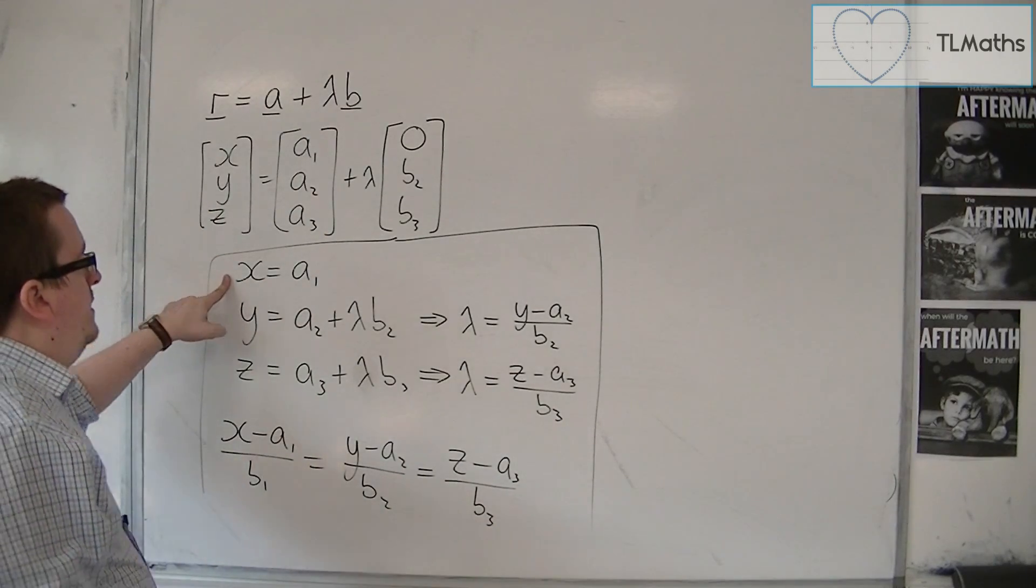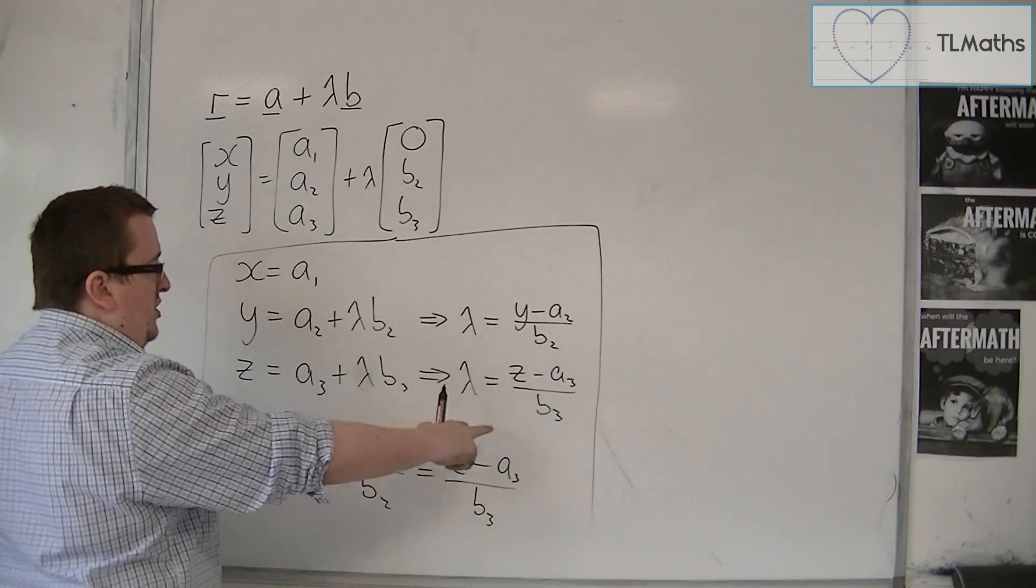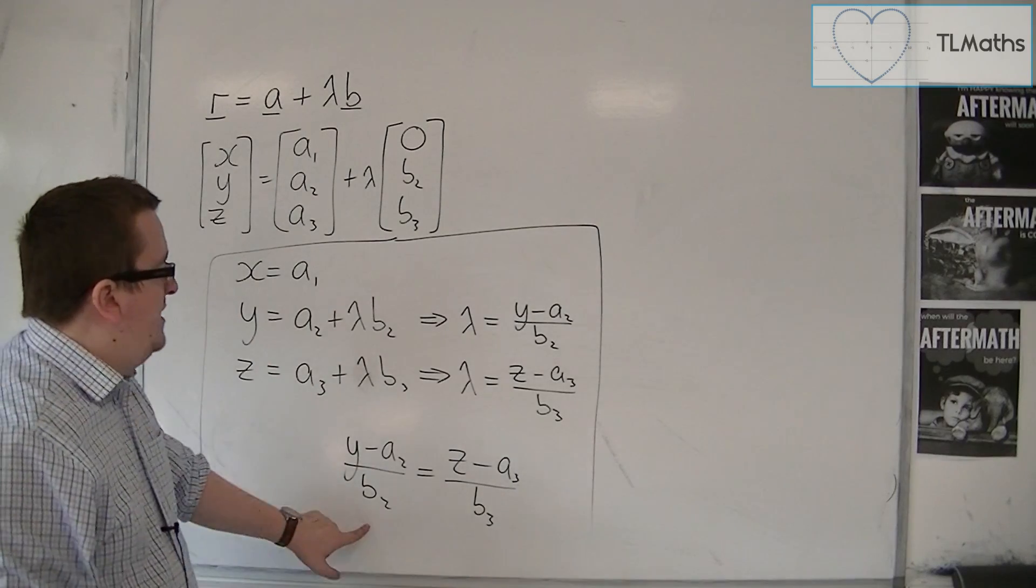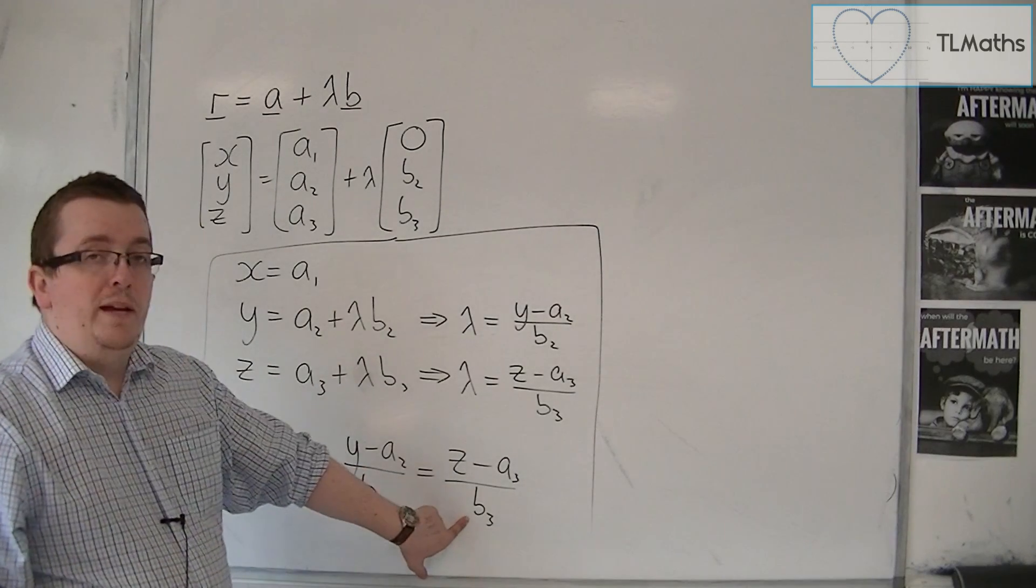So instead, you would be able to rearrange these two, and you'd be able to say that y minus a2 over b2 is the same as z minus a3 over b3.